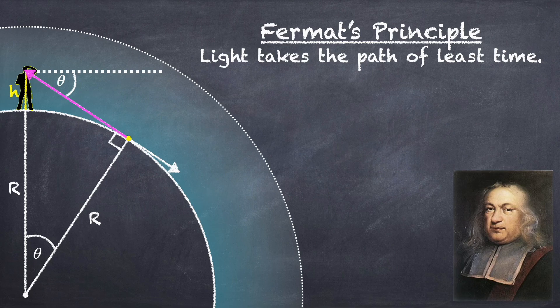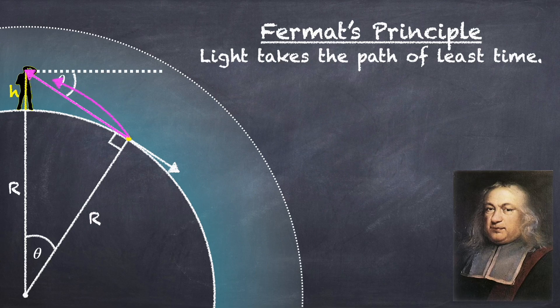So as a result, light will not travel in a straight line, but instead it will travel along a special curve that minimizes the time.